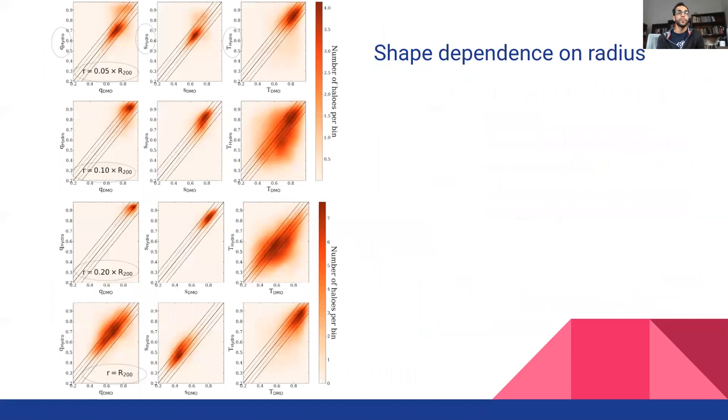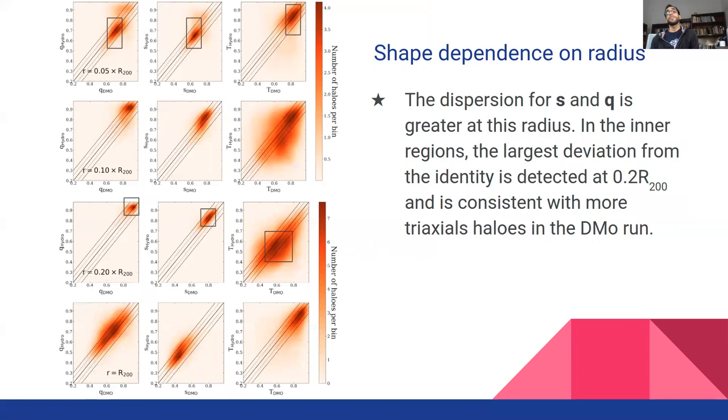In the next figure, we are showing the 2D histogram comparing the shape parameters for hydro in the y-axis and dark matter only halos in the x-axis for the Eagle simulation at four selected radii. In the outer regions, the shape parameters are almost identical for both runs, and changes in halo shapes are less significant near the virial radius.